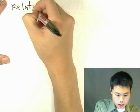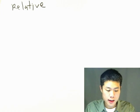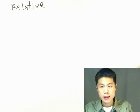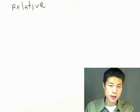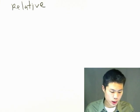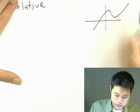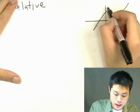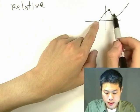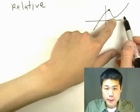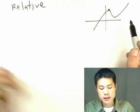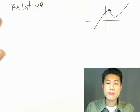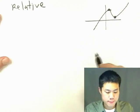Now let's move on to relative extrema. A function has a relative maximum if that value is relatively higher than its surrounding values, and a relative minimum occurs when a value is lower than its surrounding values. You can think of relative maximums as peaks or hills, and you can think of relative minimums as valleys.